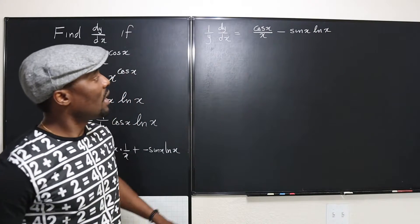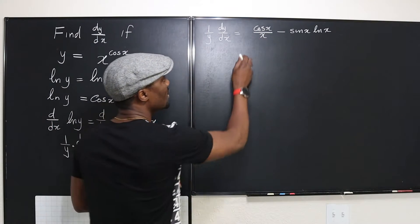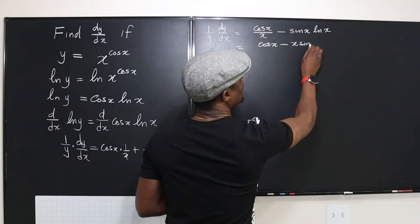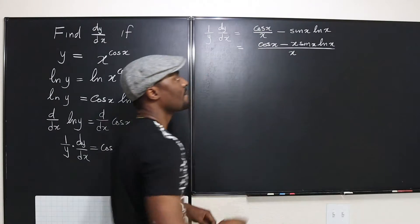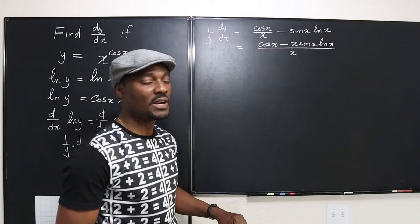So what do we do? Well, I actually would like to have a single term here. So if we have a single term, we're going to end up with cosine x minus x sine x ln x all over x. So I've subtracted both terms, and now I have a common denominator.